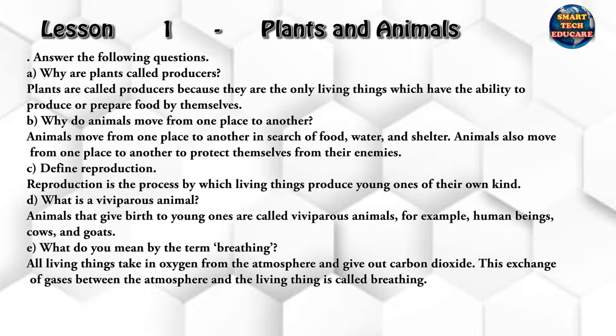Answer the following questions. Why are plants called producers? Plants are called producers because they are the only living things which have the ability to produce and prepare food by themselves. Why do animals move from one place to another? Animals move from one place to another in search of food, water, and shelter, and also to protect themselves from their enemies.